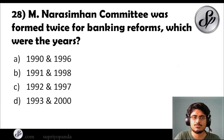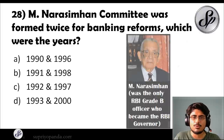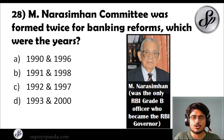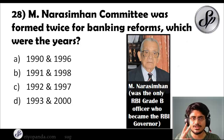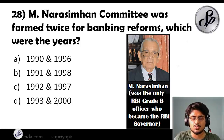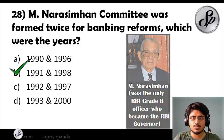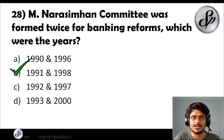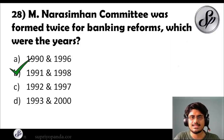Question twenty-eight: the M. Narasimhan Committee was formed twice for banking reforms. Which were the years? The answer is 1991 for Committee One and 1998 for Committee Two.